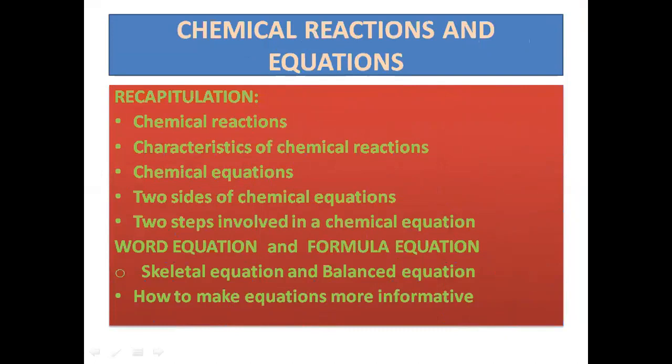We covered characteristics of chemical reactions, chemical equations, the two sides of chemical equations — the reactant side and product side — steps involved in a chemical equation, word equation and formula equation, and two types of formula equation: skeletal equation (also known as unbalanced equation) and balanced equation. We also discussed how to make equations more informative, since chemical reactions cannot always be performed in the laboratory and are represented as chemical equations. But there are some limitations to chemical equations.